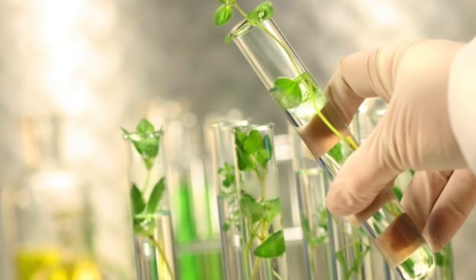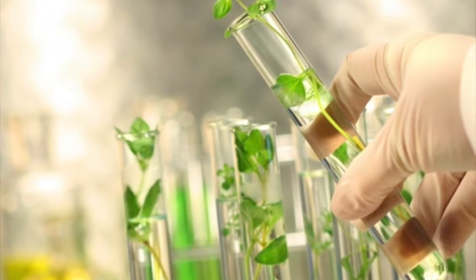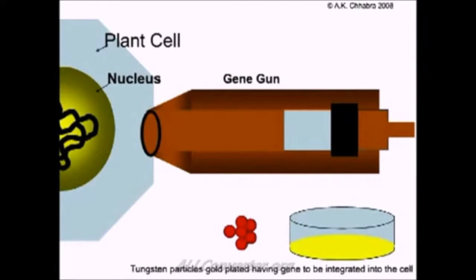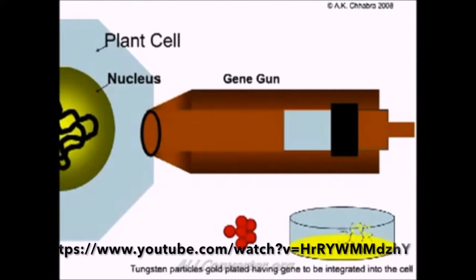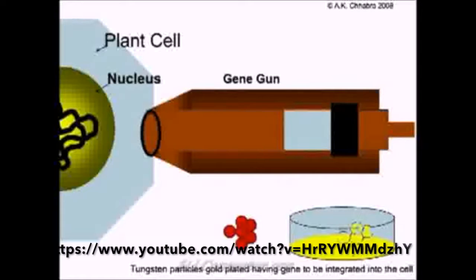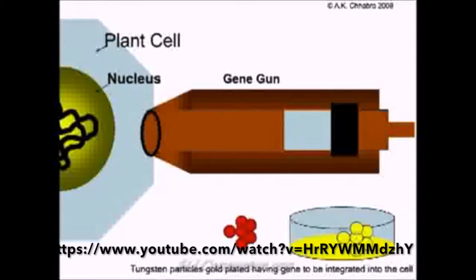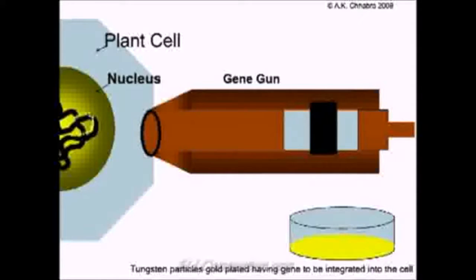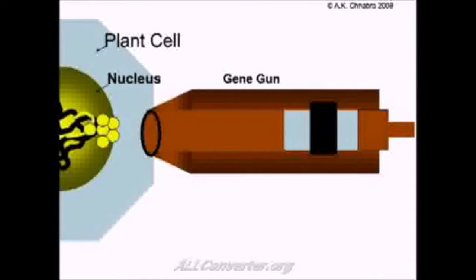The first stage in making a genetically modified plant requires the transfer of DNA into a plant cell. One of the methods used to transfer DNA is to coat the surface of small metal particles with the relevant DNA fragment and bombard or shoot the particles into the plant cells. This is carried out with pressurized inert gas such as helium or by high-voltage electronic discharge.